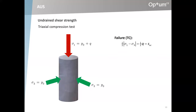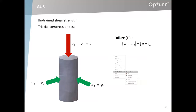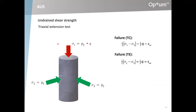That critical magnitude is what we call the undrained shear strength, with a subscript C to indicate this is a compression test. We could also run a different test — an extension test — where instead of increasing the vertical stress, we decrease it. That also leads to an increase in the difference between sigma one and sigma three, and once that reaches a critical magnitude we have failure. We indicate that by SUE, E for extension.